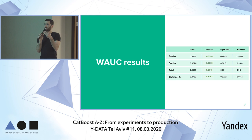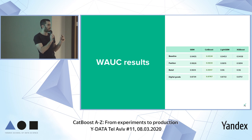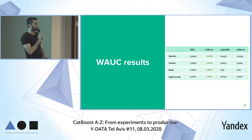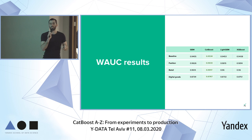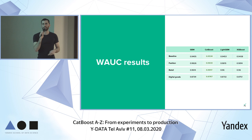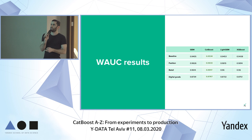For the Weighted AUC results: CatBoost had the best Weighted AUC in all four datasets. Looking closely, in the last three datasets the differences are pretty minor, but for us it's very meaningful — even a minor improvement in Weighted AUC translates to a lot of fraud prevention. We repeated the experiment multiple times and consistently saw CatBoost achieve the best Weighted AUC.